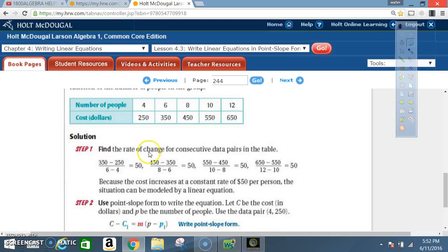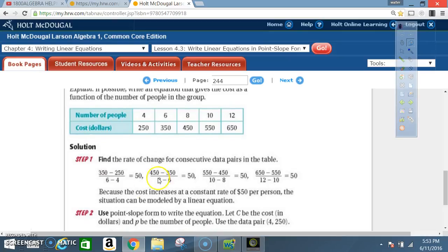Solution. Step one. Find the rate of change for consecutive data pairs in the table. All right, so now to find the rate of change, look at what we're doing. We're taking the slope, which is M is equal to what? Y sub 2 minus Y sub 1 over X sub 2 minus X sub 1. So, for this set of pair, for this pair right here, this becomes my Y sub 2. So, Y sub 2 minus 250. That's what they have right there. Six minus 4, that's my X value, so that's right there. And we repeat the same process all the way through. And notice that come out with 50, 50, 50, and 50.